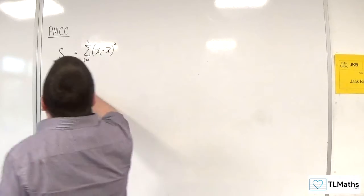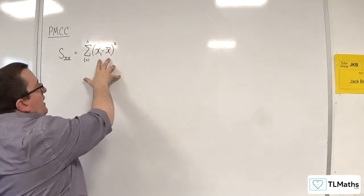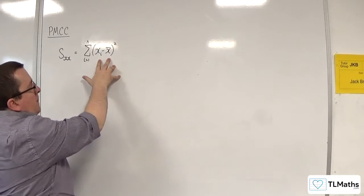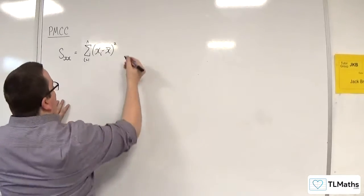So with SXX, this was the sum from i's 1 to n of XI take away X bar squared. And just as I did in the previous video, I'm going to expand the brackets out.